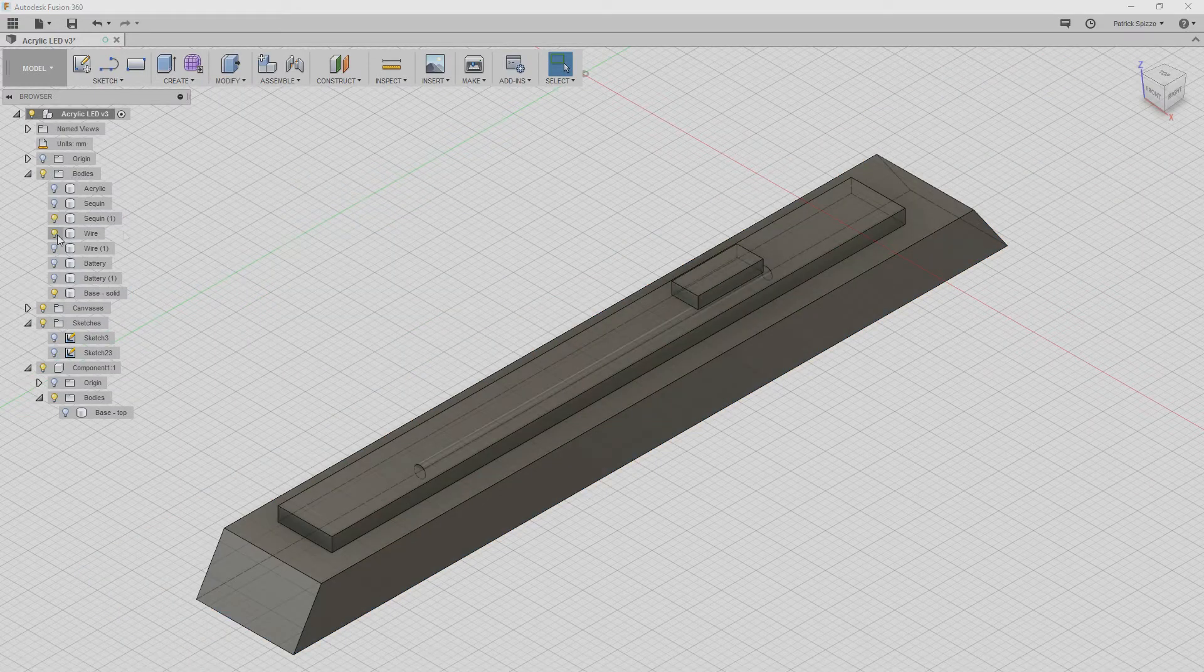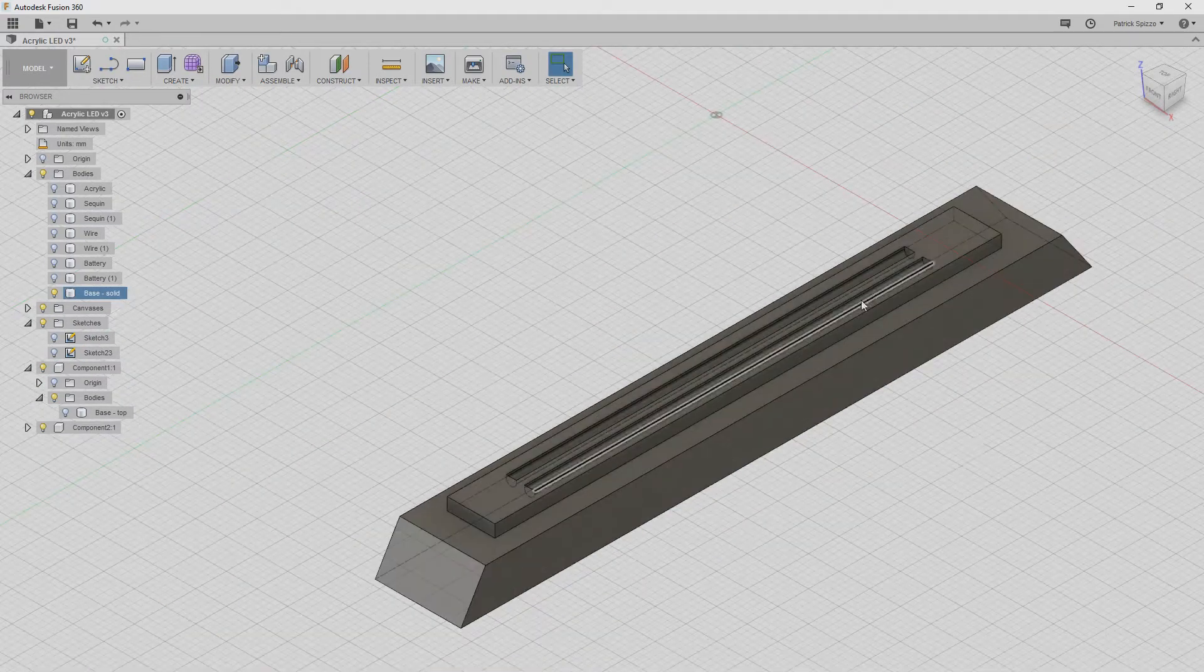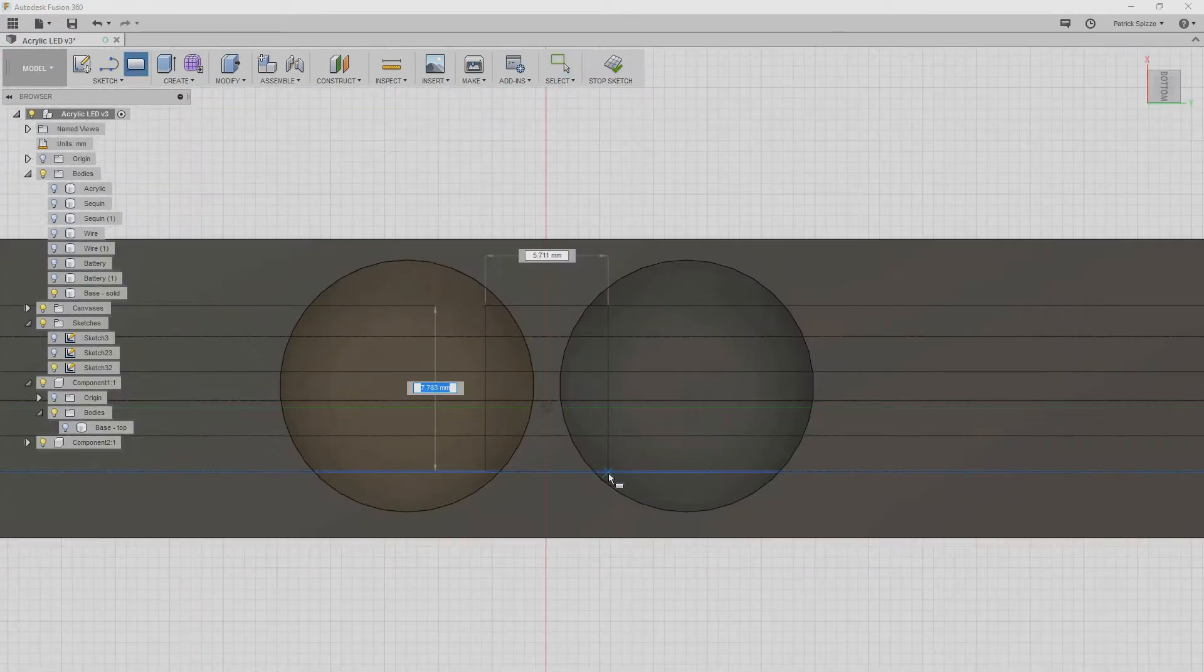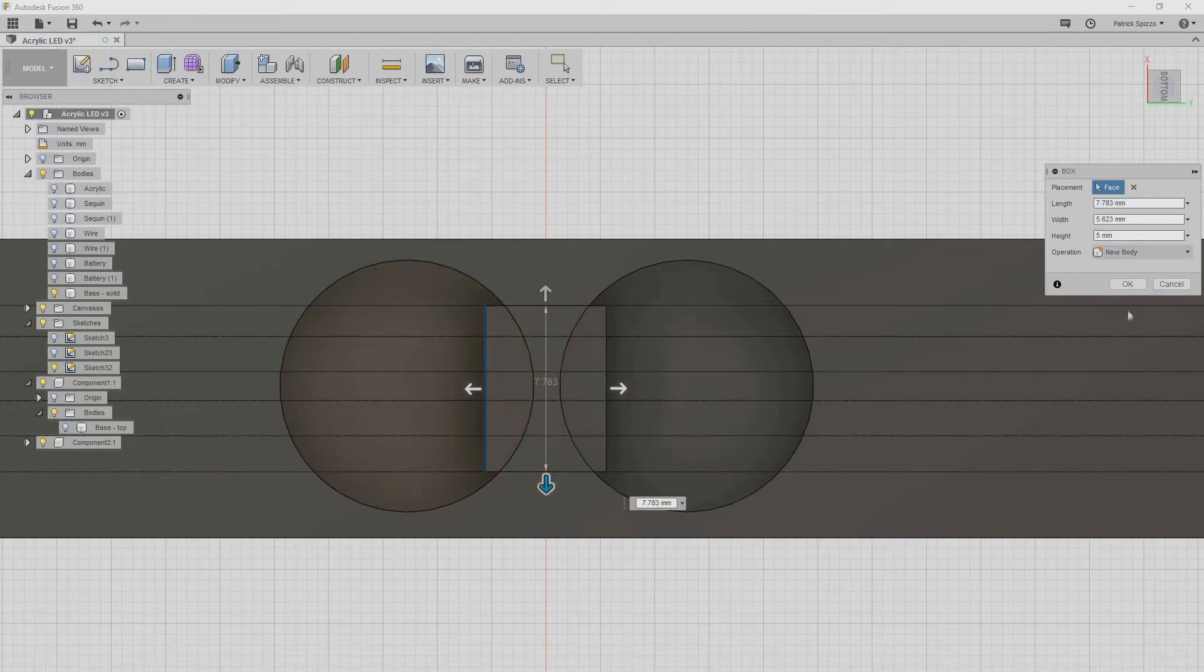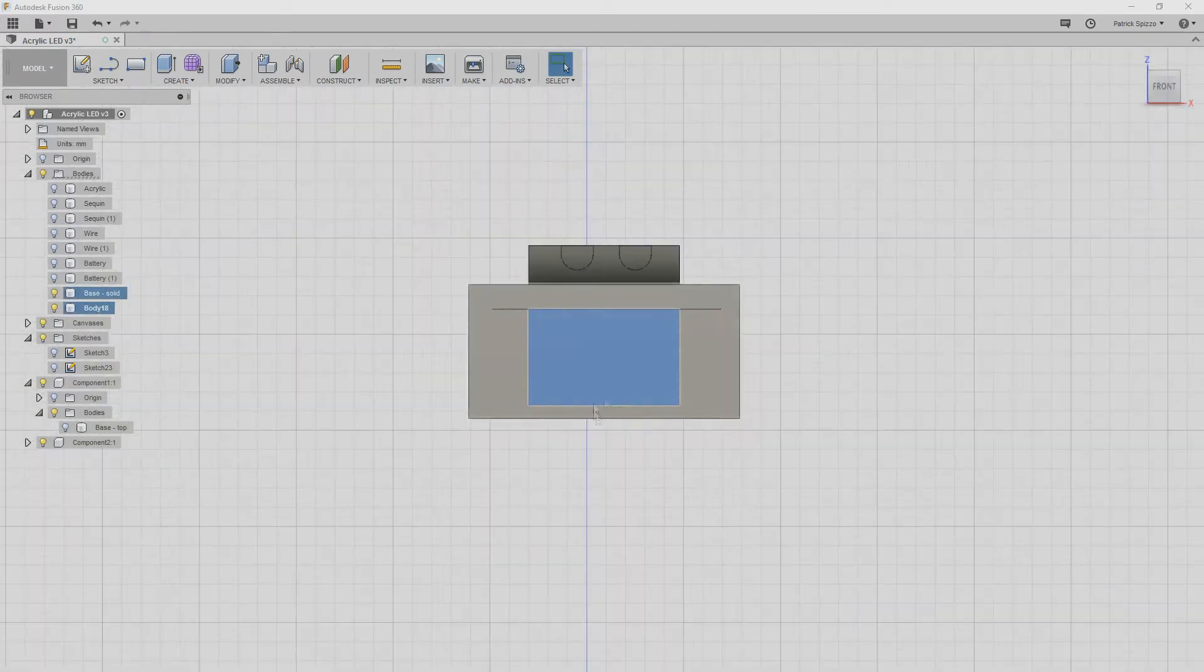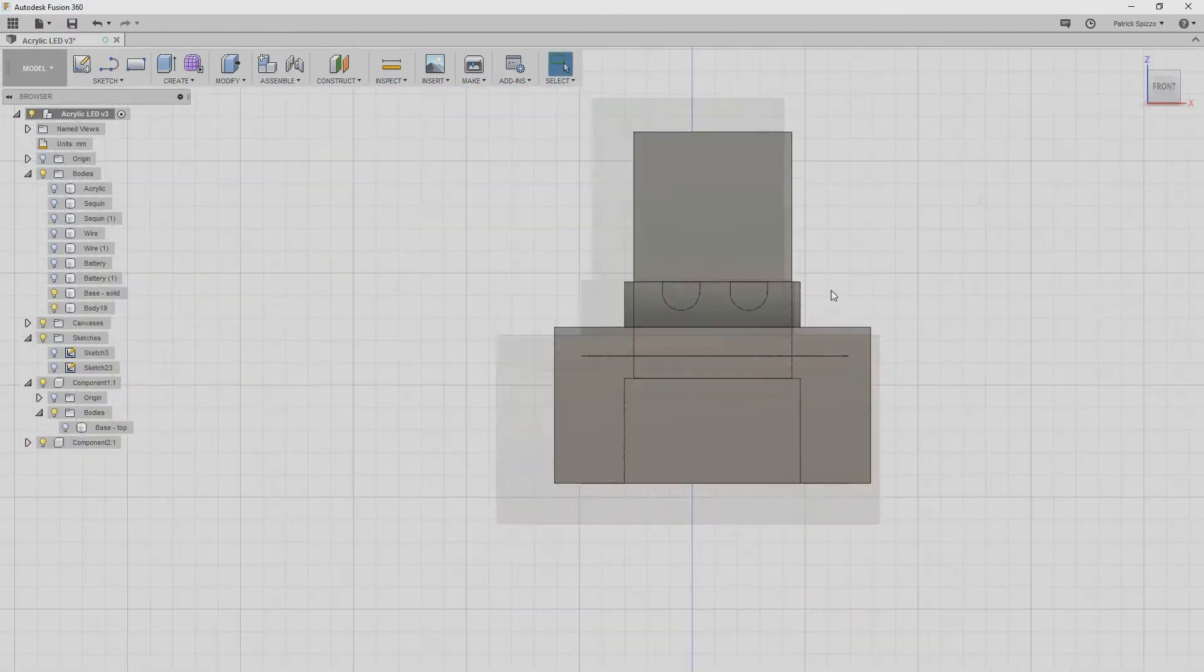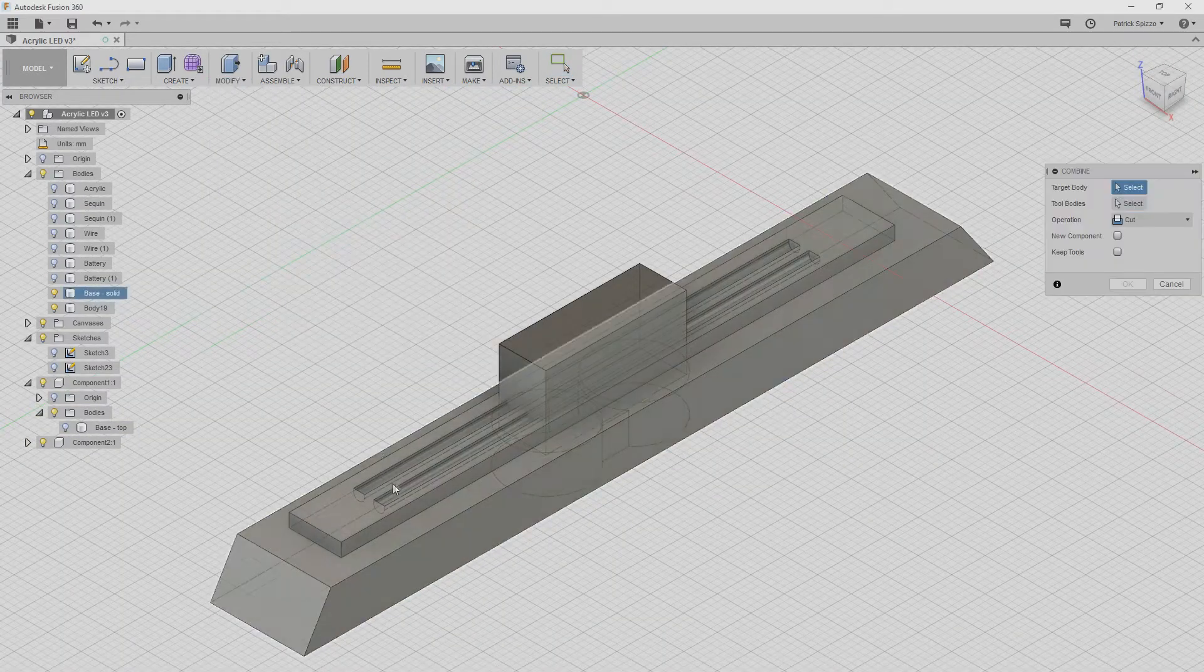I used another box in combine to cut out some room for the wires and LED, and then used the wire bodies to cut grooves into the base. Then I cut some room in the bottom for the batteries and joined those spaces together. And finally, I cut a hole from the battery section to the top so I can feed the wires through.